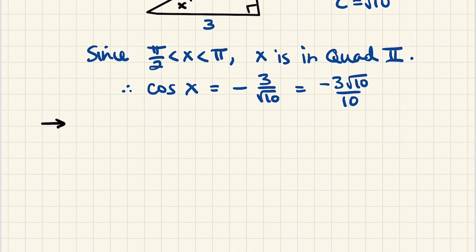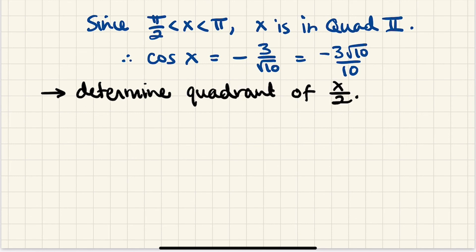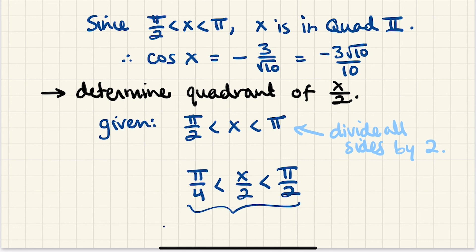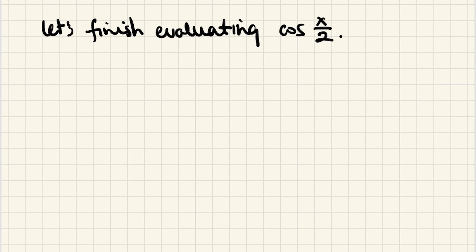Now let's determine what quadrant x over 2 is in. We were given that x is between pi over 2 and pi, so let's divide everything by 2, giving us pi over 4 is less than x over 2 is less than pi over 2. We can see from here that x over 2 is in quadrant 1. That means cosine of x over 2 will be positive — in fact, any trig function of x over 2 will be positive.